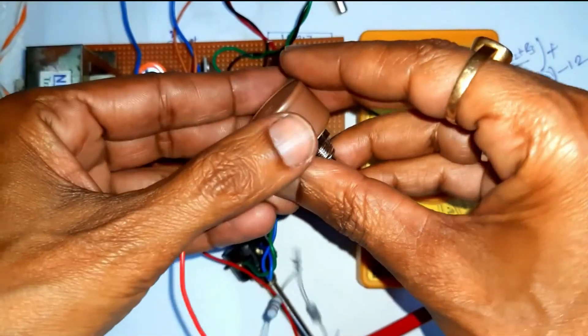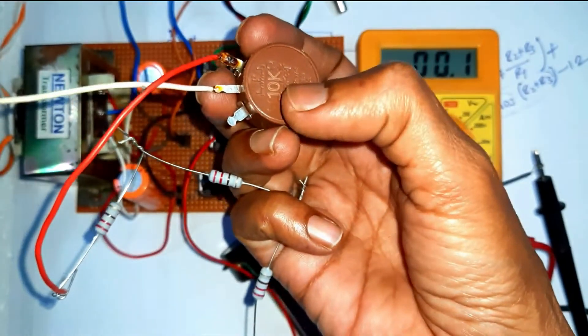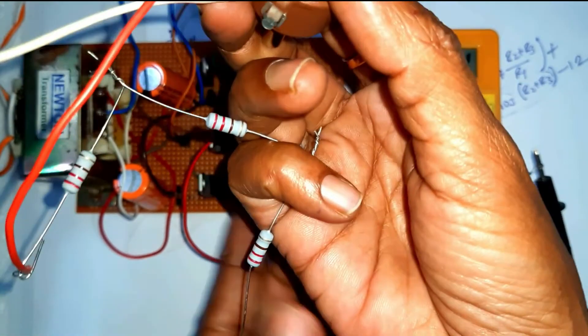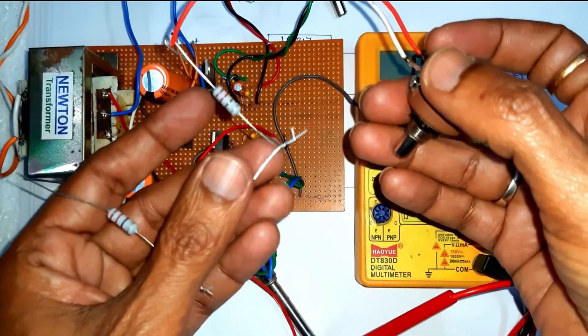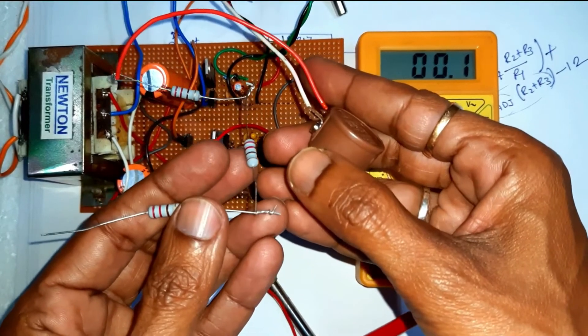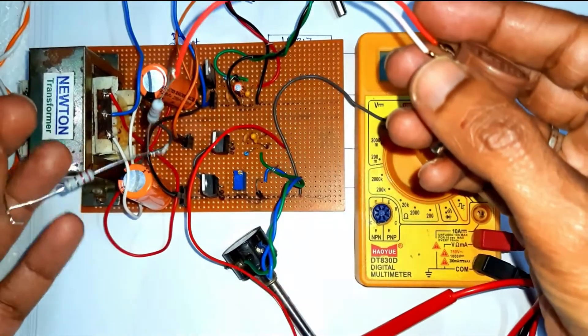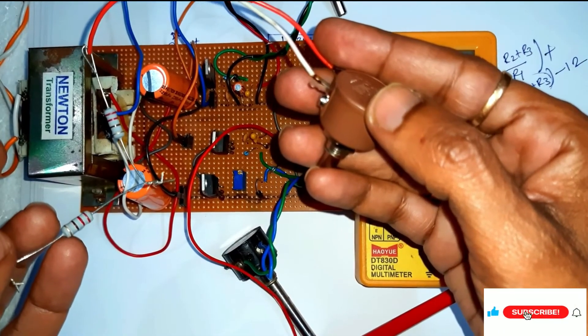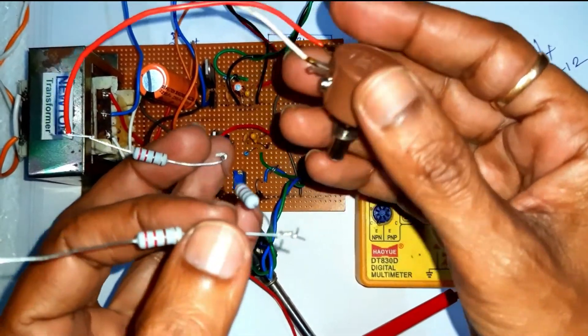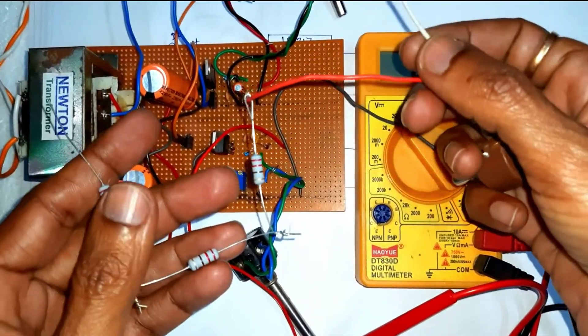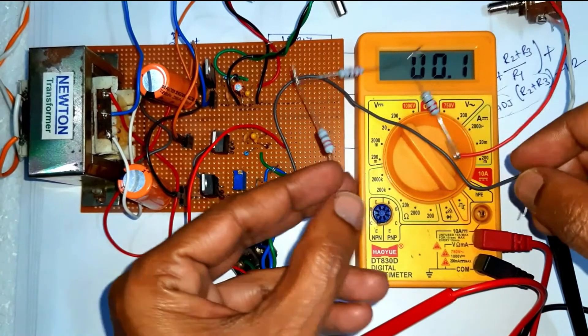Now, here, we are connecting a variable resistance of 10K in series with a fixed resistance 220, 220 and 220 that is 660 ohm resistance set as a load. Connecting a fixed resistance with this pot is necessary to avoid the short circuit as we are not using any short circuit protection in this circuit.